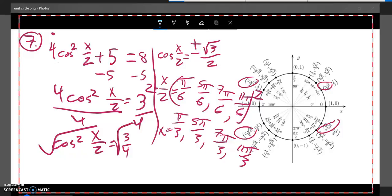But my original problem, I was bounded 0 to 2 pi. So that means those are too big. I've got to throw those out. And those are my solutions.